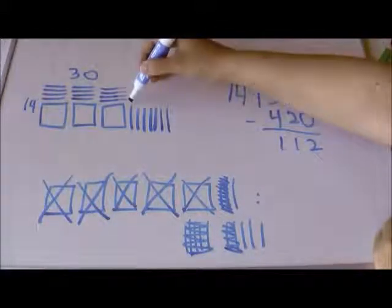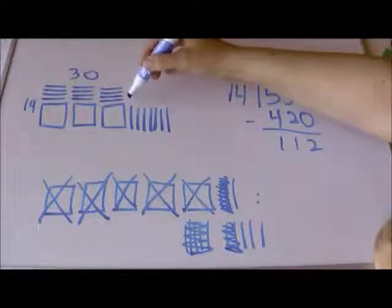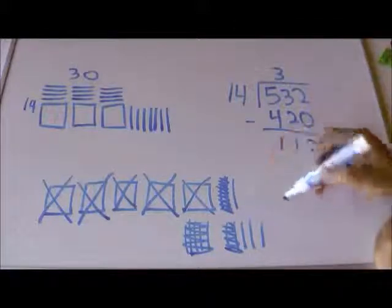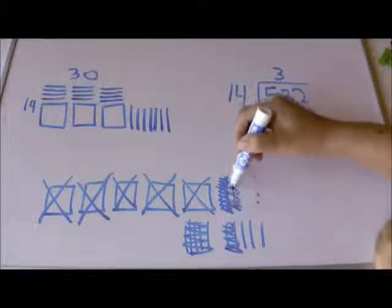So, now I have gone across 7 and up 4. So, 7 times 4 is 28. Nope, I have more than 28 here. So, let's try another one.